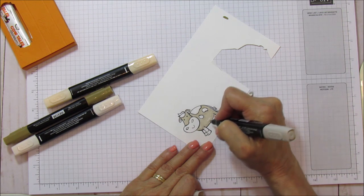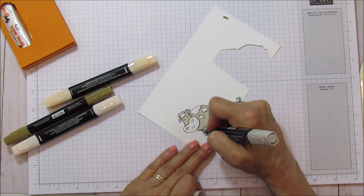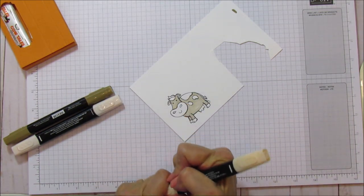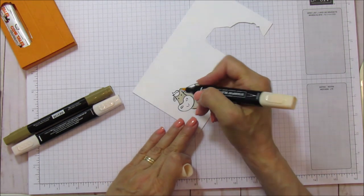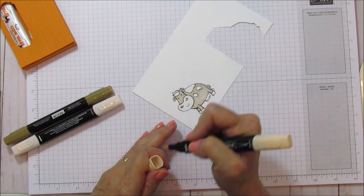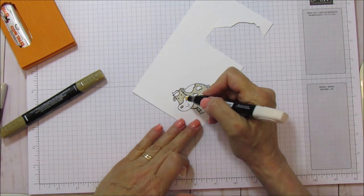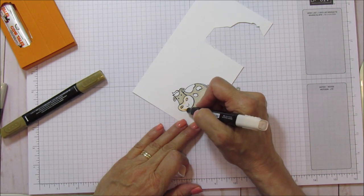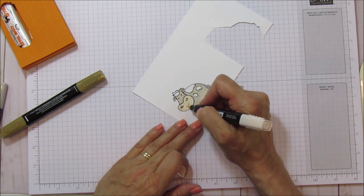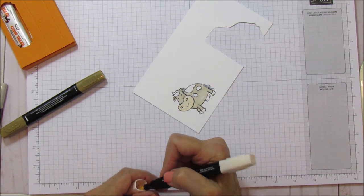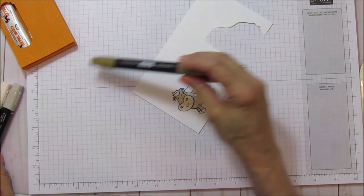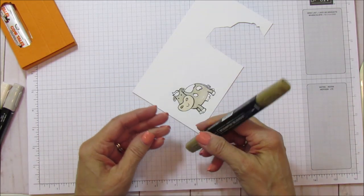You can even have your kids do this part. It's so easy. We're going to do the dark for his ears. And then I'm going to just do the light. I'll tell you here in a minute. It's light and dark pink petal pink. And then I am using for his body light crumb cake, and for his spots we're using dark soft suede.